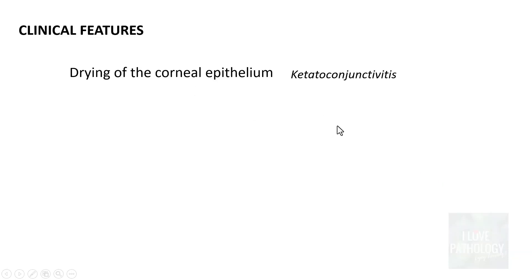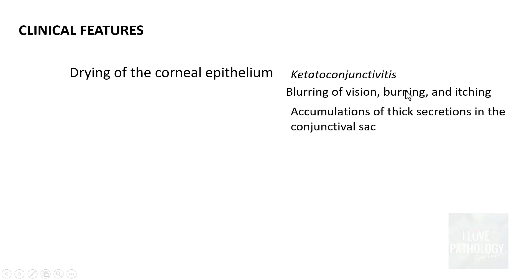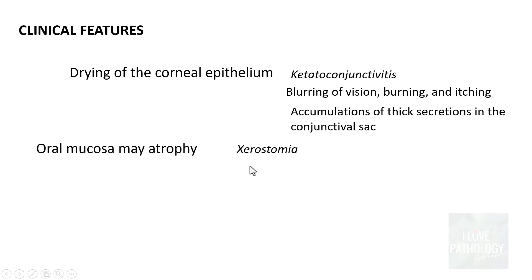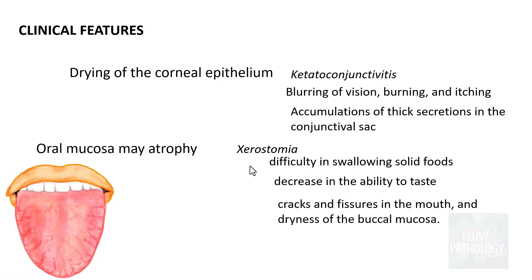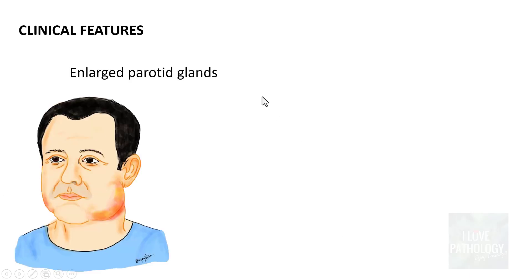Clinically, the most common manifestation is drying of the corneal epithelium — keratoconjunctivitis — causing blurring of vision, burning, and itching, with accumulation of thick secretions in the conjunctival sac. Oral mucosa may atrophy — referred to as xerostomia — leading to difficulty in swallowing solid foods, decreased ability to taste, and visible cracks and fissures in the mouth with dryness of the buccal mucosa.